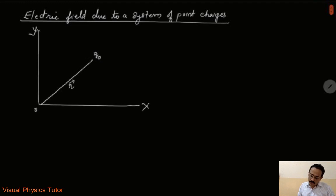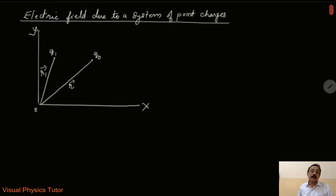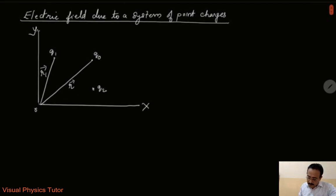Similarly, let me consider another charge q1 at a vector distance r1 vector from the origin. Similarly, I can assume another charge q2 to be at a vector distance r2 from the origin.